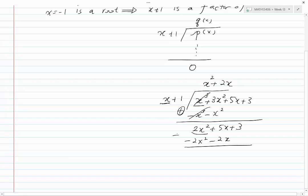If we add these two expressions, 2x squared and minus 2x squared cancel, 5x minus 2x would be 3x and we have a plus 3 left from before.